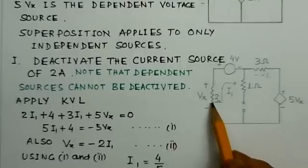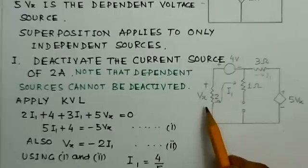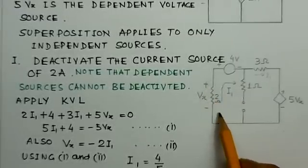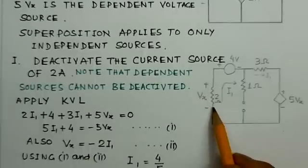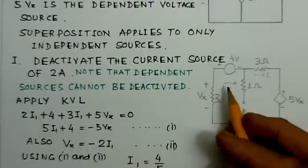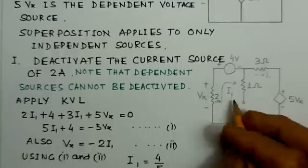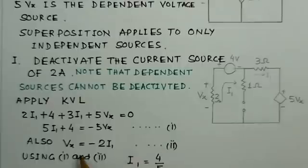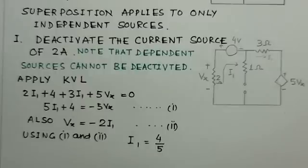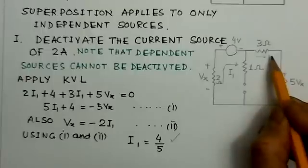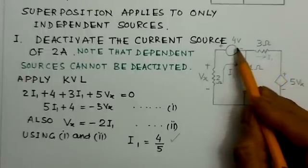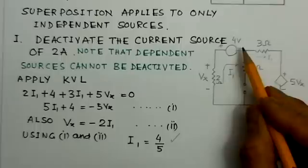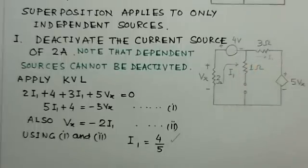You notice that the voltage Vx is given a polarity. This Vx with this polarity would be minus 2I1, because if I1 is flowing, this polarity, this end should be positive and this should be negative. Using these two equations we can determine the value for I1. This is the value of I1 because of the 4 volt source while the current source has been deactivated.